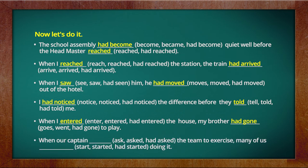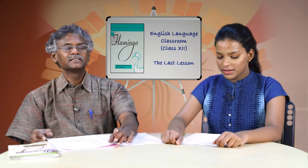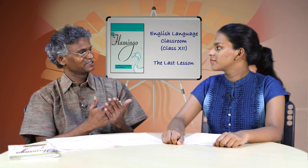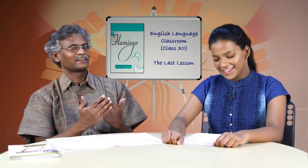The last one: whenever the captain had asked us to exercise, many of us started doing it. Learners, there are two actions in the past: the first action — we use past perfect; the second action — we use past. The classic example we always give is: 'When I reached the station, the train had already left.' When I went to the school, the bell had already rung.